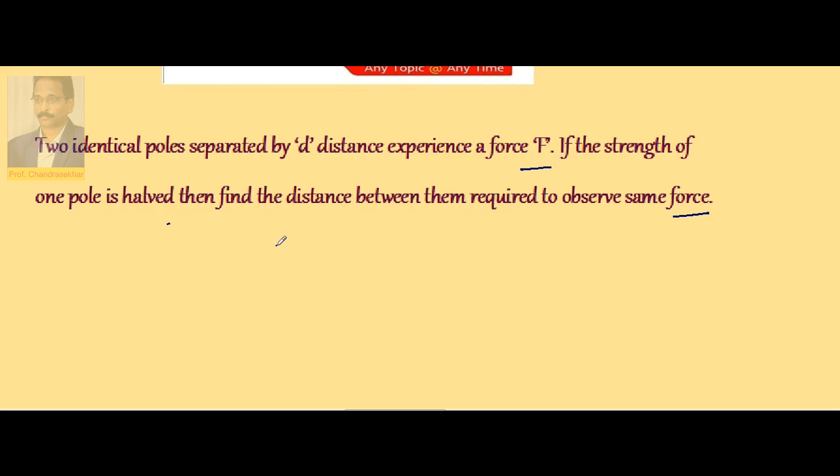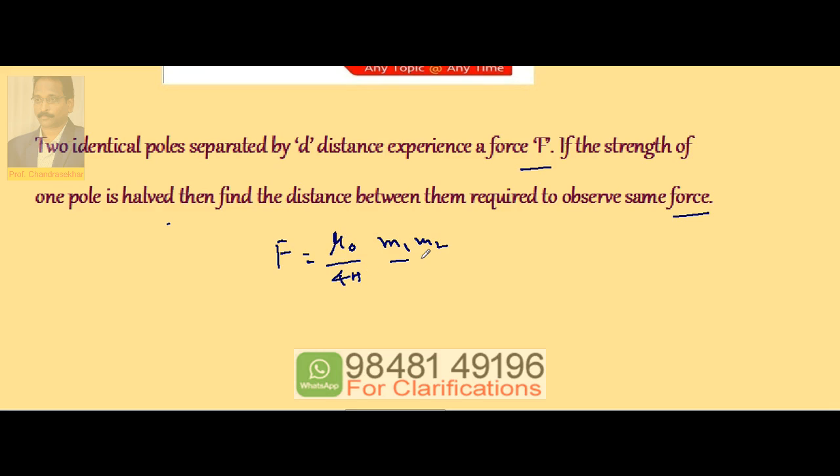Let us consider F equals mu naught by 4 pi M1 M2 by D square. Force must be same, mu naught by 4 pi is constant, one pole is kept constant. So let us say M2 is also constant.